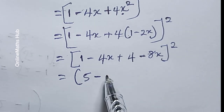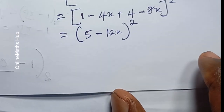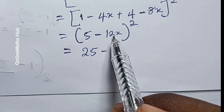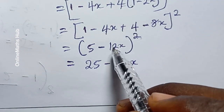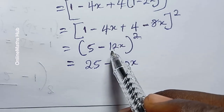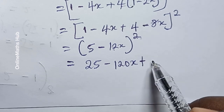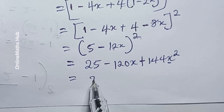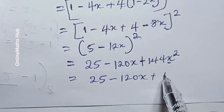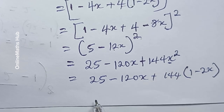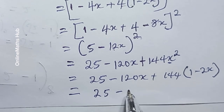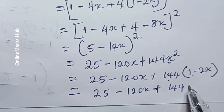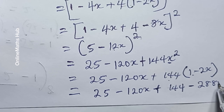Simplifying inside the bracket: 1 plus 4 is 5, and minus 4x minus 8x gives minus 12x, all raised to power 2. Now opening this bracket: 5 times 5 is 25, 2 times 5 times 12 is 120x, and minus 12x multiplied by minus 12x gives plus 144x squared. I then substitute x squared again to get 25 minus 120x plus 144 into (1 minus 2x).